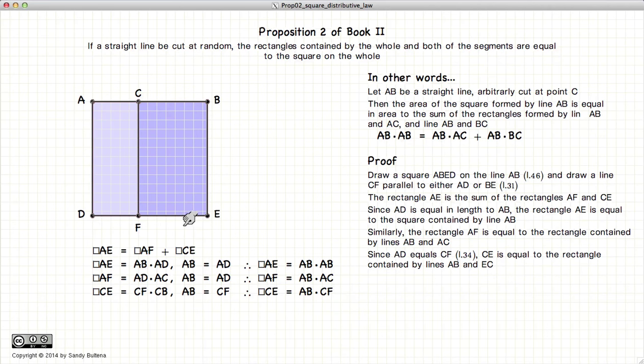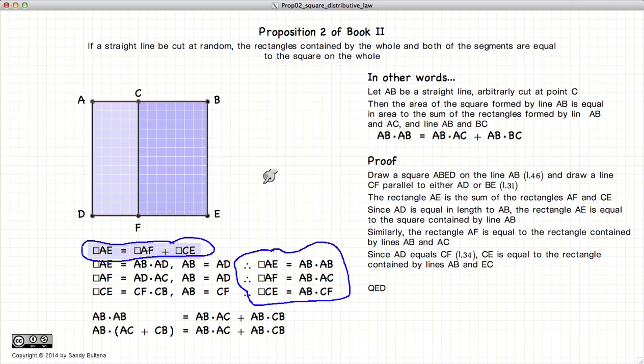So if we gather up all these bits of information, we have our definition of the sums of the rectangles plus what the rectangles are equal to. We end up with AB squared, AB times AB, equal to AB times AC plus AB times CB.